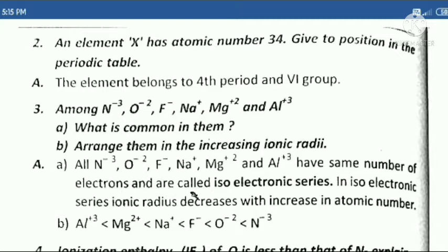Third question: Among N³⁻, O²⁻, F⁻, Na⁺, Mg²⁺, and Al³⁺ — A. What is common in them? B. Arrange them in increasing ionic radii.